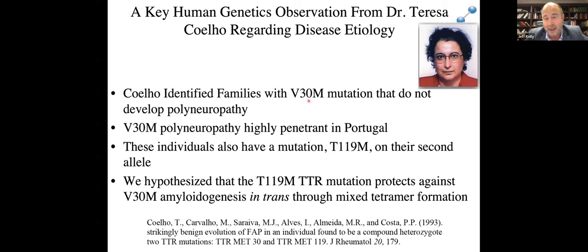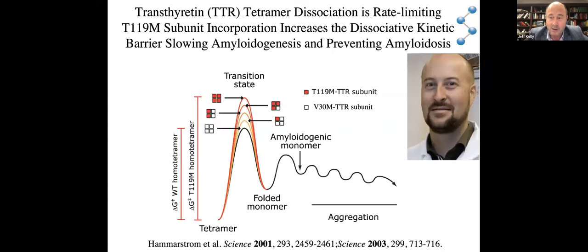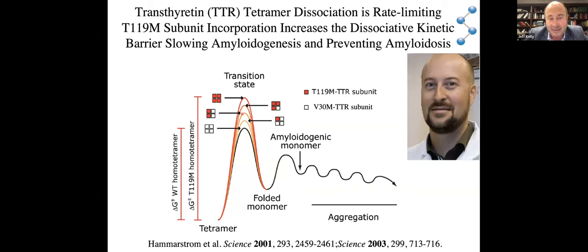There was a really important genetic observation from Teresa Calejo and her colleagues in Portugal. She identified families with this very common polyneuropathy mutation, and half the people in these families were not presenting with disease at age 30 as expected. They had a mutation on both gene copies: on copy one, the pathogenic mutation; on copy two, a so-called interallelic trans suppressor. Per Hammarström, a postdoc in the lab, found that incorporation of protective subunits — the T119M subunits — destabilizes the dissociative transition state, increasing the activation barrier for tetramer dissociation. Even though these subunits are misfolding-prone, they can never reach the monomer required for misfolding because the activation barrier is so high, and this prevents disease onset.